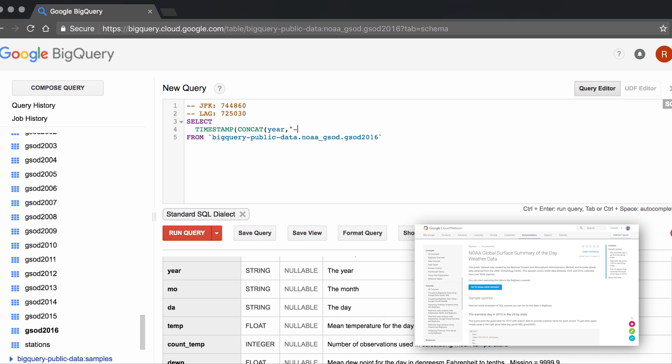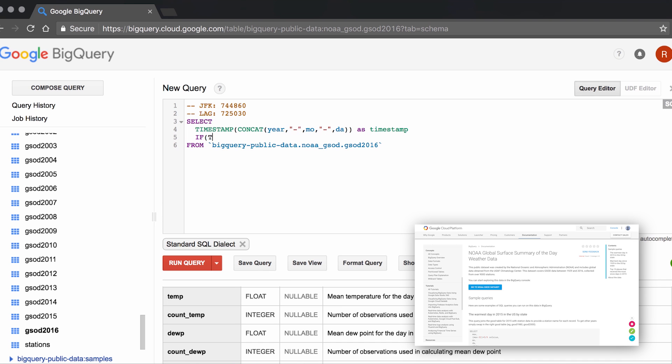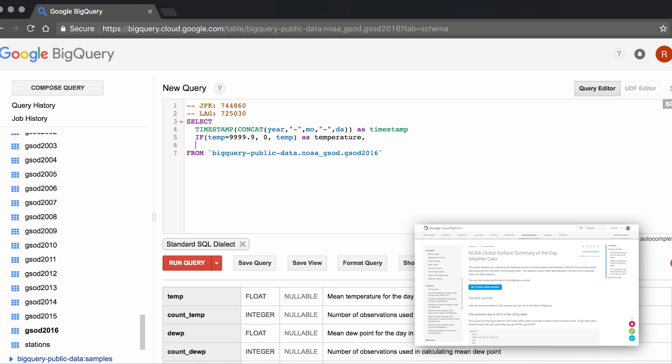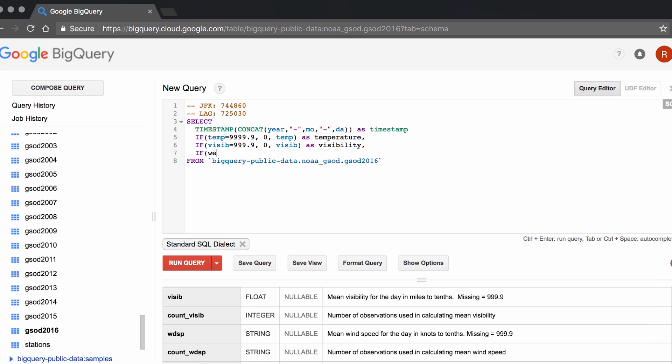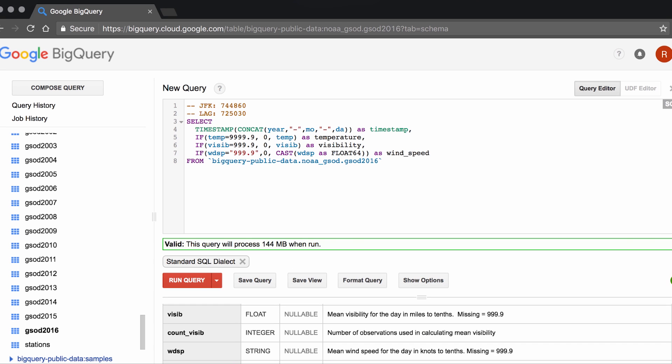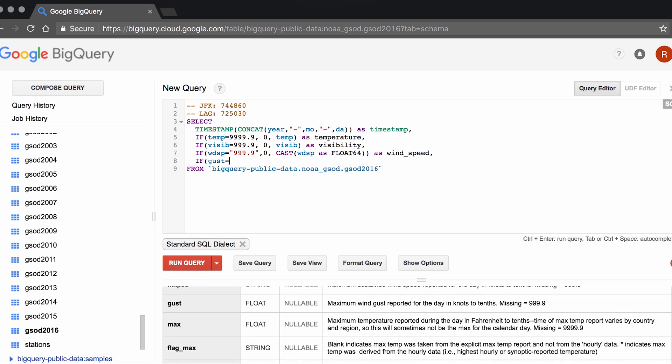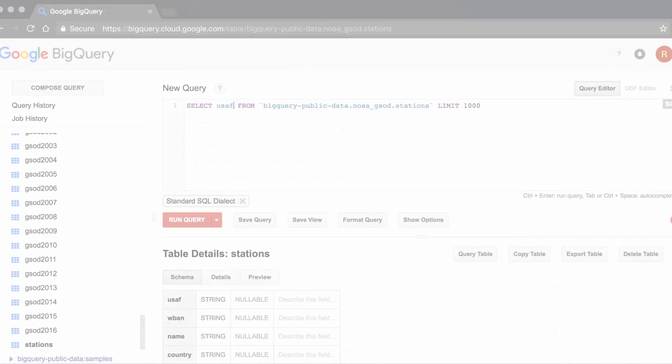The NOAA Global Summary of Day tables include a dozen weather variables reported from 9,000 stations dating back to 1929. And we don't need all of that. We'll extract just the weather variables we need and replace the 999.99 values, which are used to represent null with zero, so that our averages make a little bit more sense.